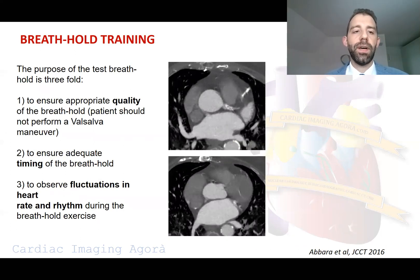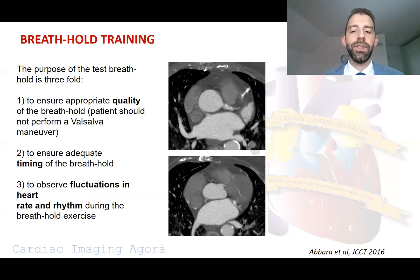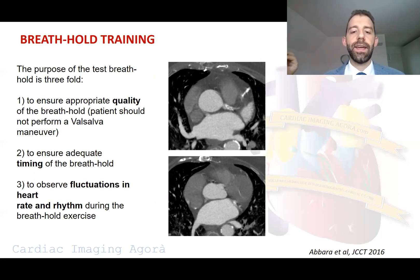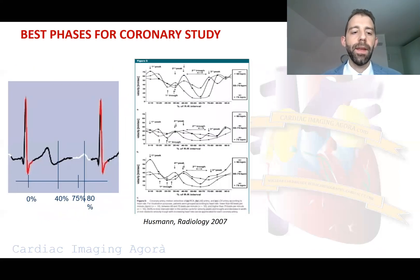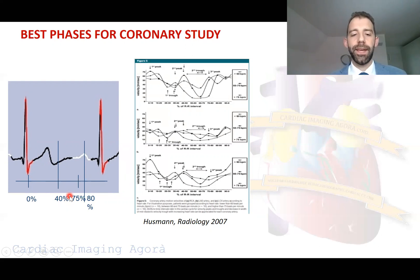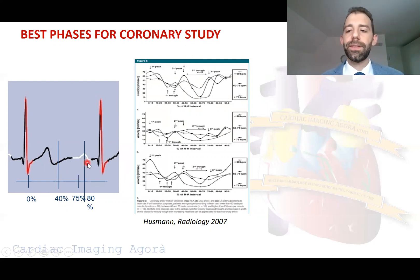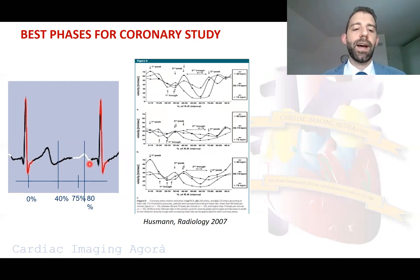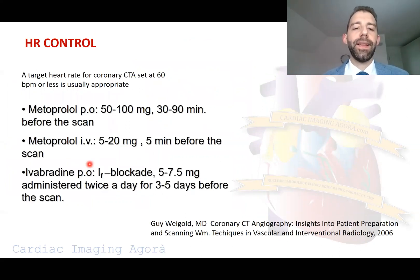First of all, it's important to do breath training. It's important to ensure the thorax is still during the acquisition, and to observe the fluctuation in heart rate during the breath-hold exercise, because that is the phase when we are going to acquire the images. To improve temporal resolution, we have to prolong diastole as much as possible, since this is the part of the cardiac cycle where the coronary arteries are still. Our target must be less than 65 BPM, or even better, less than 60 BPM.